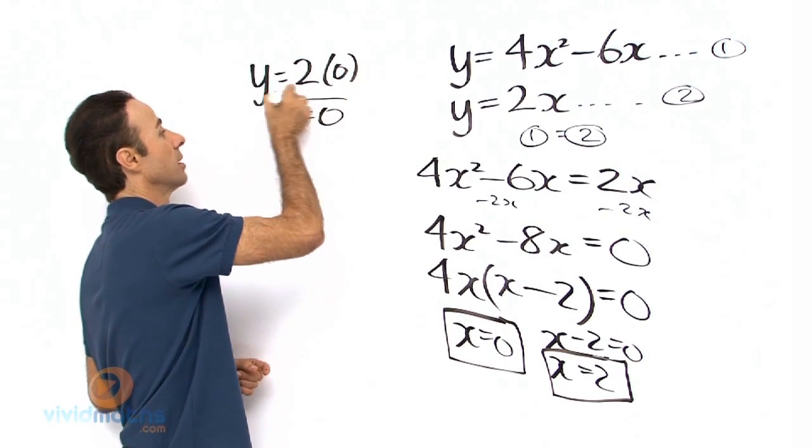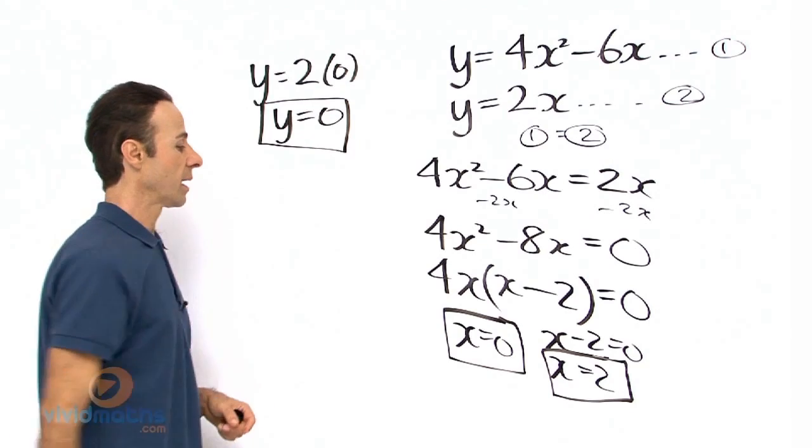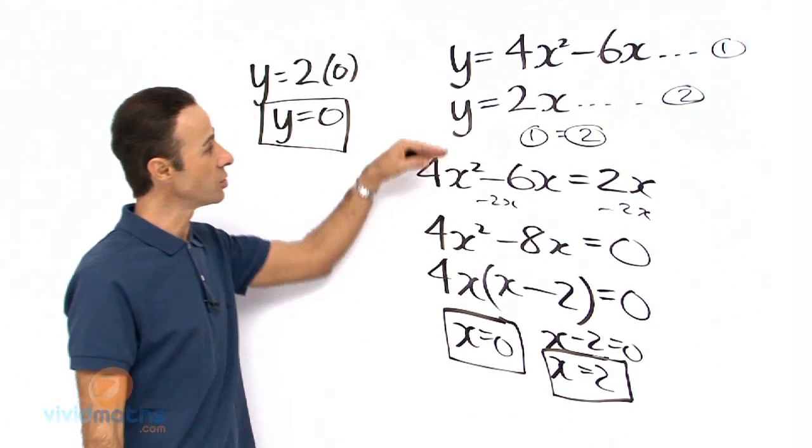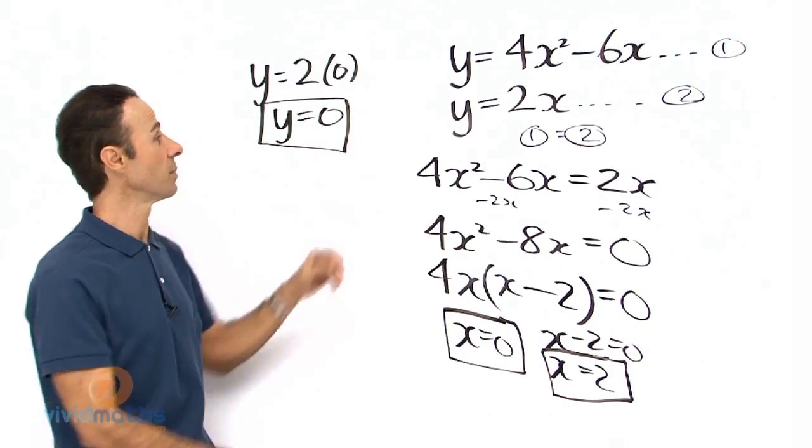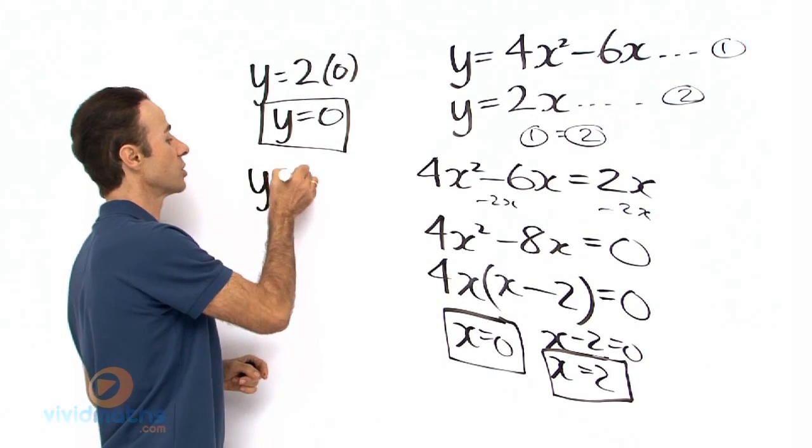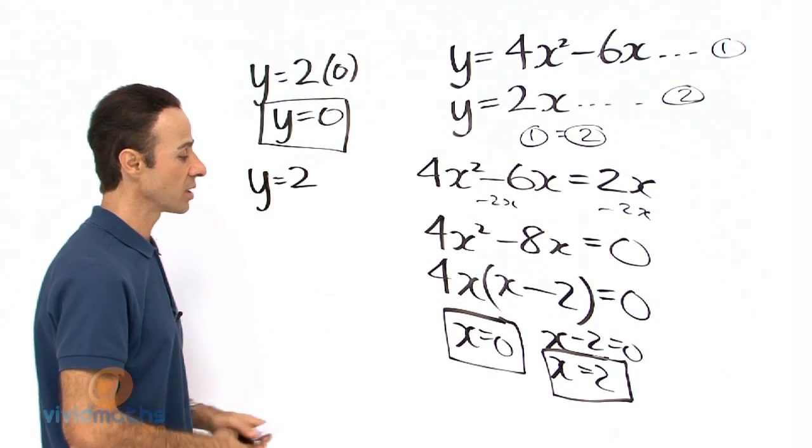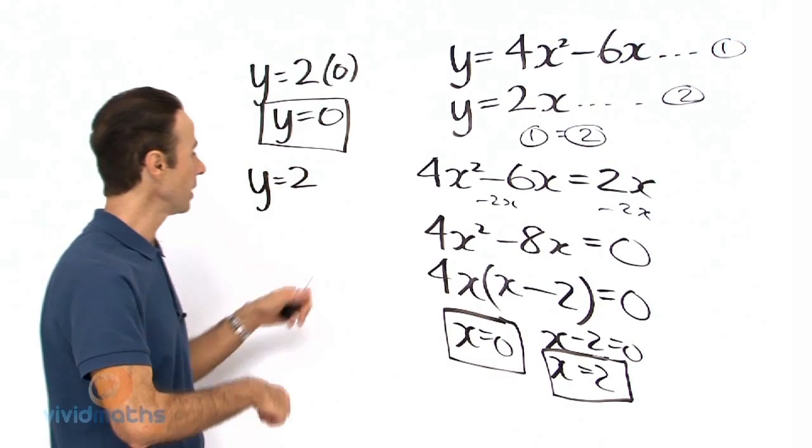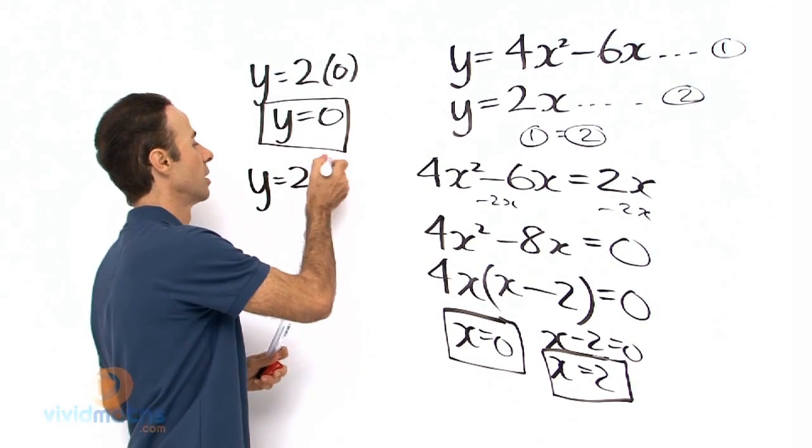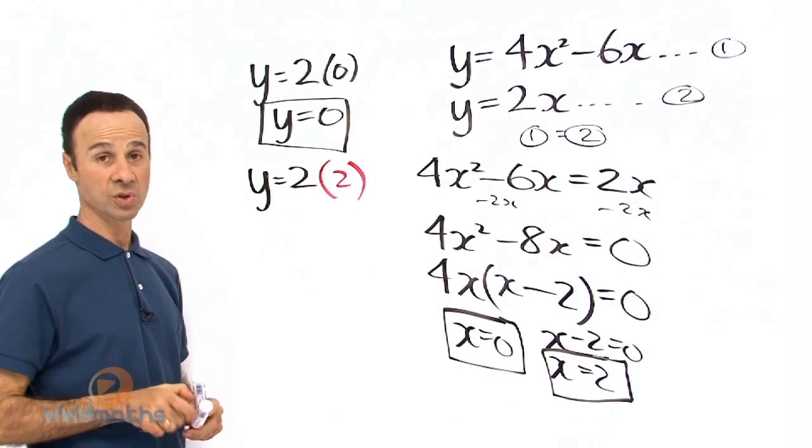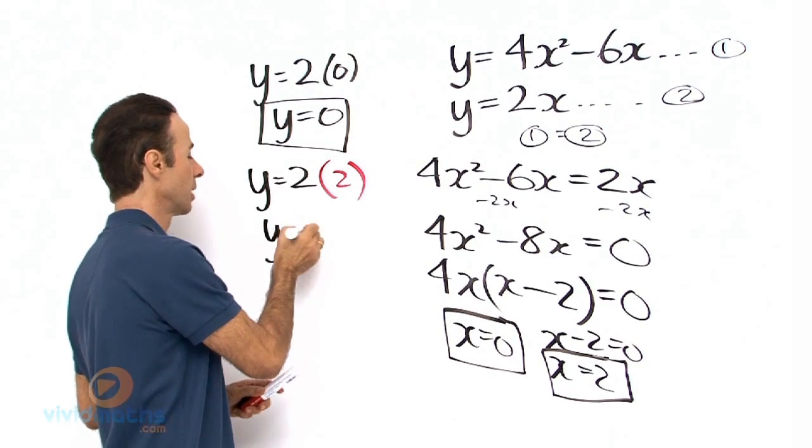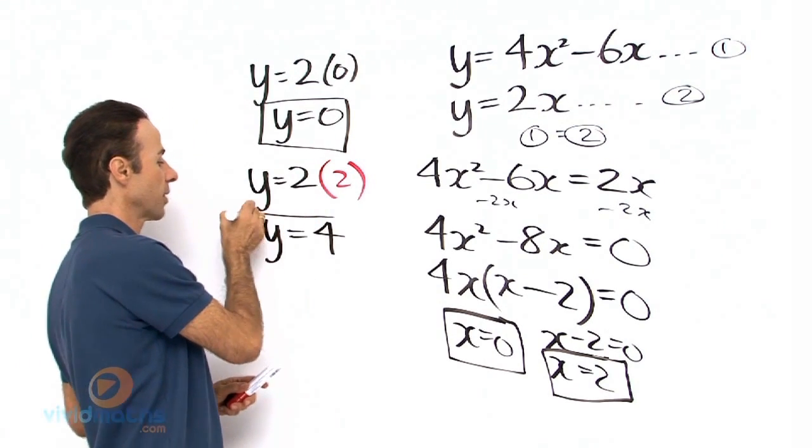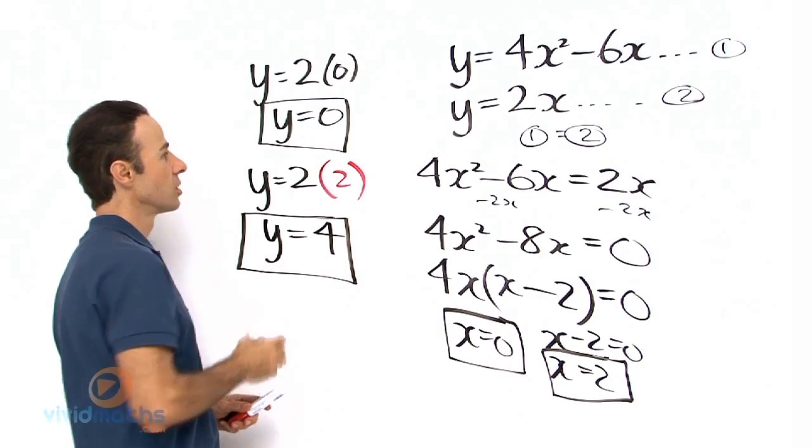So that is the other pronumeral, and now let us take x equals 2, substitute it into the second equation right here. So that means we have y equals 2 times, and in brackets we take that 2 from over here, bring it up here, so that means 2 times 2 is 4. Therefore y equals 4, and that's our second solution.